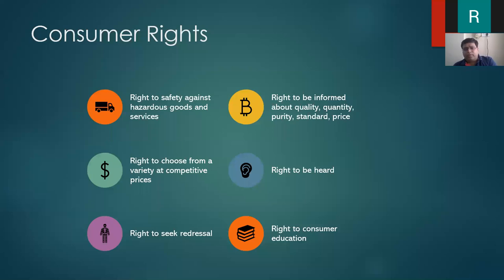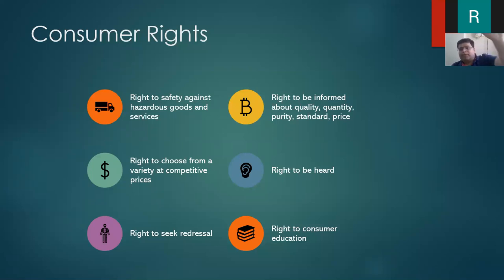The right to choose from a variety at competitive prices means the market should have options. It should not be that only one product is available and no other is permitted to enter the market. Soaps are available from 7 rupees to 700 rupees — it is the consumer's choice which to buy. You cannot say only the 700-rupee soap will be sold in this market. Variety options should always be made available to the consumer.